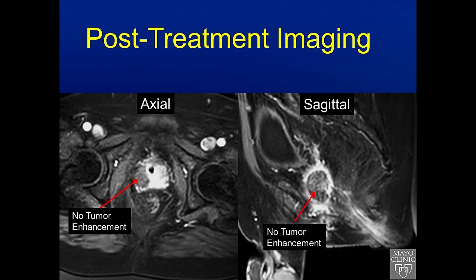Post-treatment imaging demonstrates a lack of enhancement in the right side of the prostate surrounding the tumor, and this is exactly what we are hoping to achieve, because we need to not only treat the tumor but also treat a margin surrounding the tumor for effective cancer control.